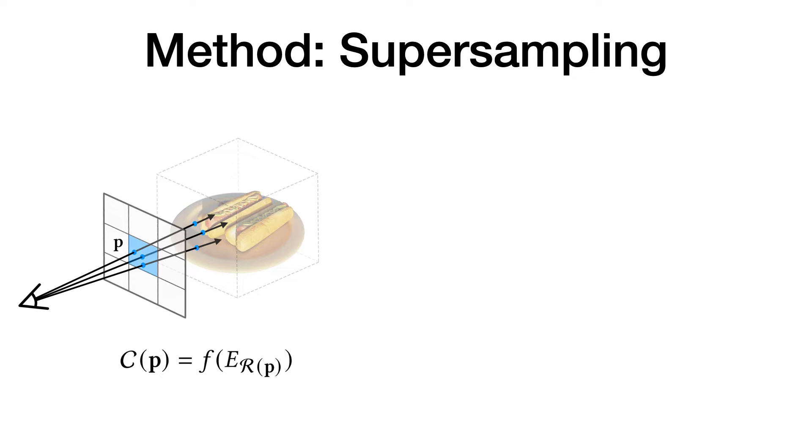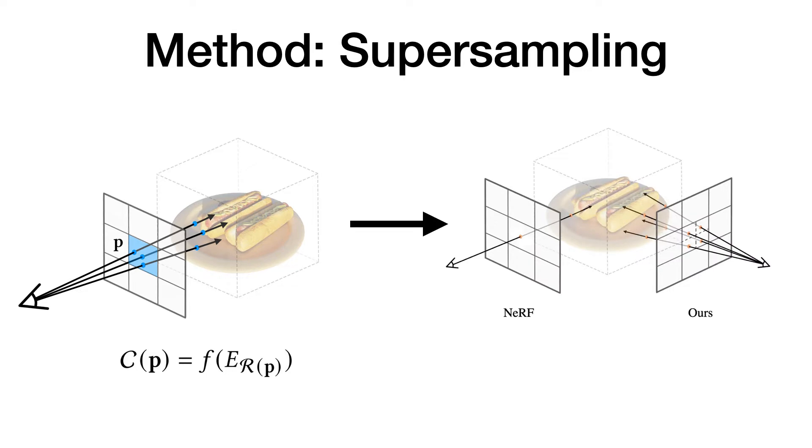Therefore, in our work to super resolve images at the scale of S, we first evenly split a pixel from training set into an S times S grid of subpixels Sp. Here we show an example of S equals 2. We can see that one pixel is divided into four subpixels. We can then predict the color of each subpixel using the MLP directly.